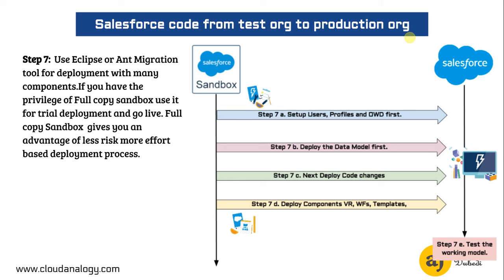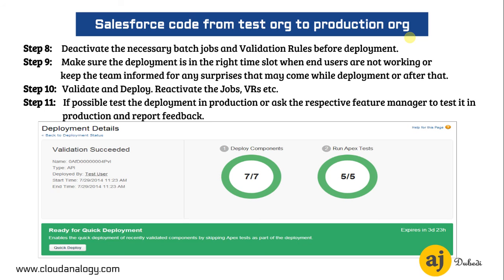The third step is to push in the code changes. Be very careful here because the data model already exists and your code changes must go in correctly. If it is failing it might be due to missing fields, missing custom settings, or missing labels being accessed by the code. Last but not least, push the rest of the configurational changes — validation rules, workflow rules, templates, and so on. After deployment, make sure you have tested the working model so it doesn't bring any surprises to the end user.